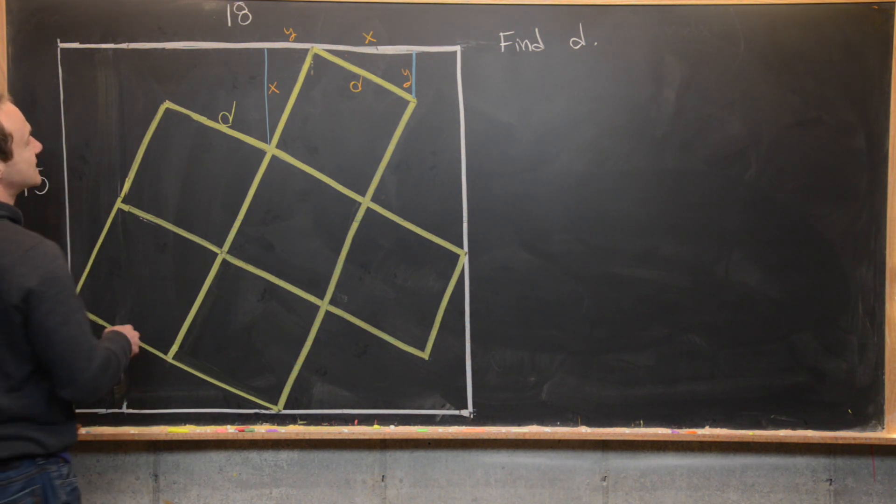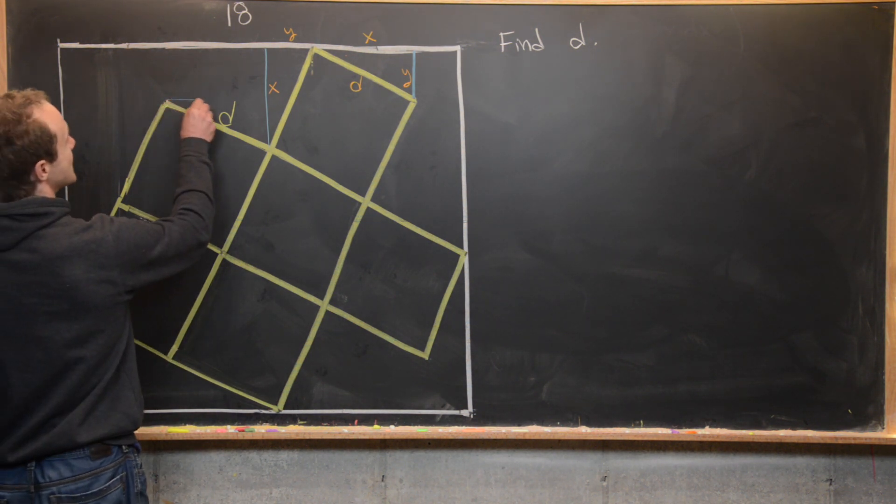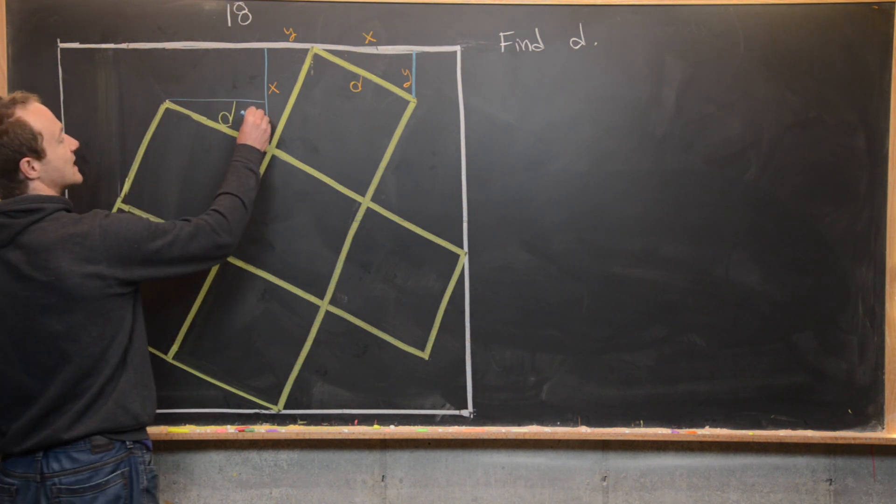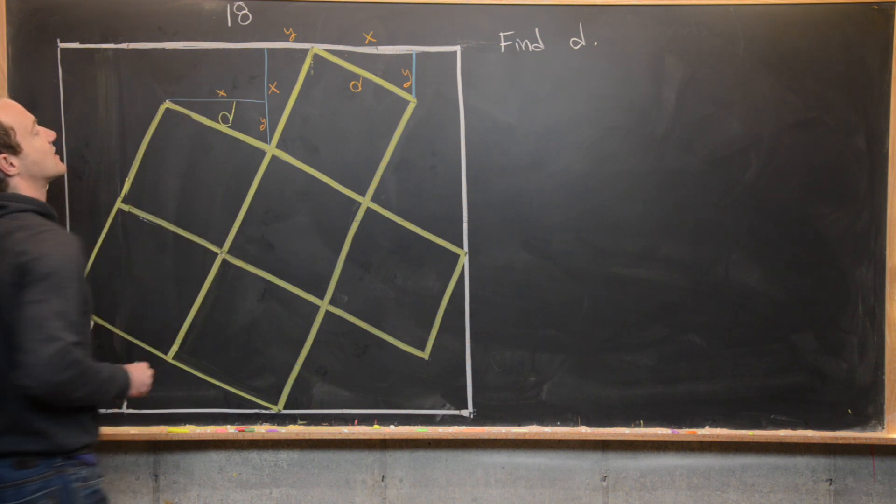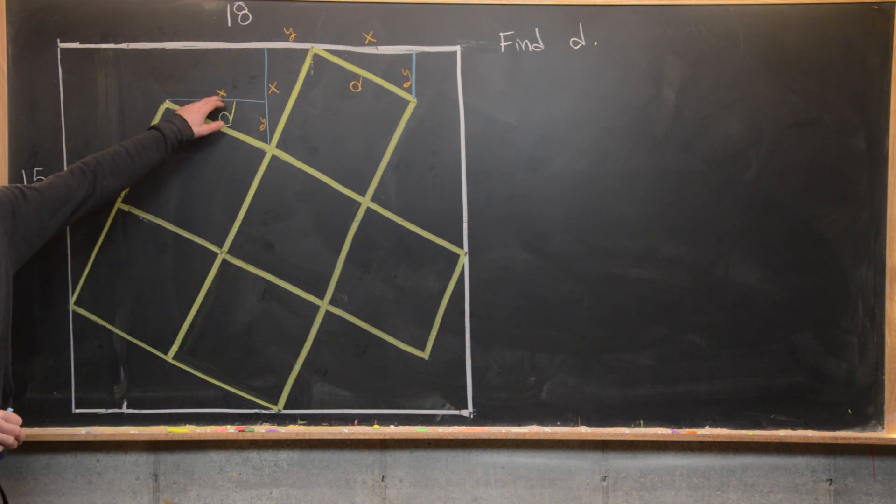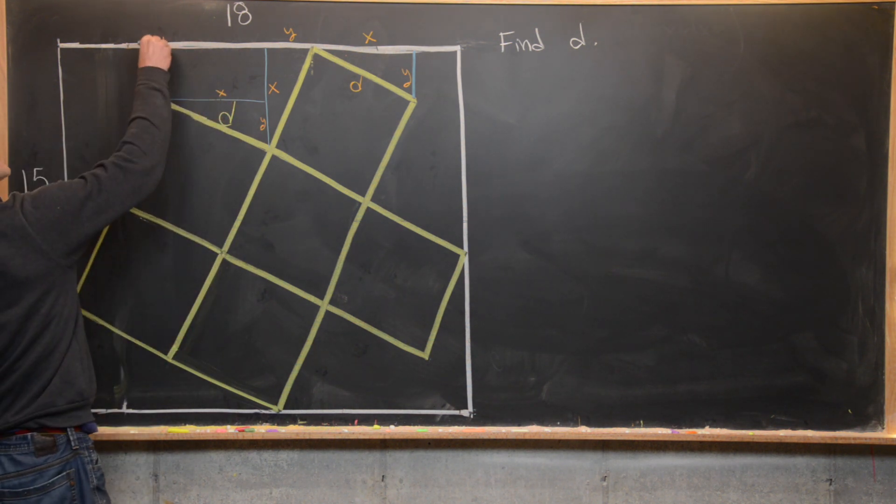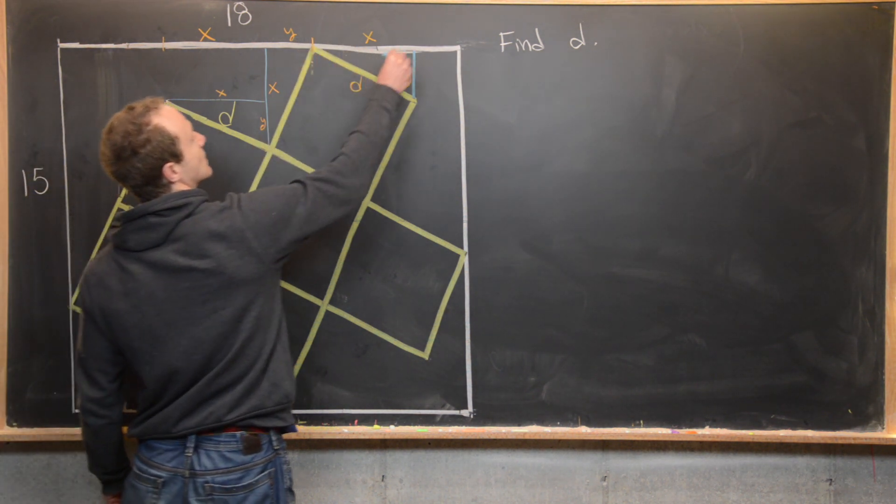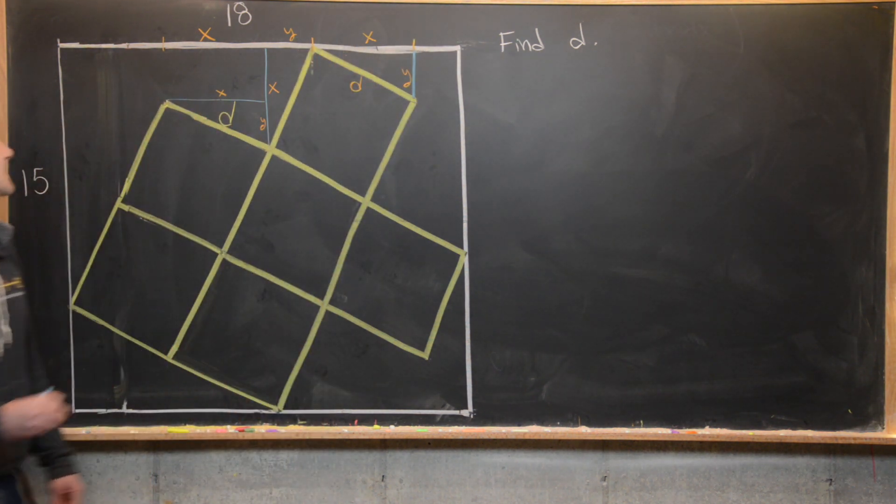And then next that triangle is right here as well. So that makes this distance right here Y and this distance right here X. But we can transpose this X up here. And notice we're starting to break up our top edge of this rectangle in terms of these sides X and Y.